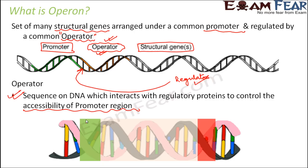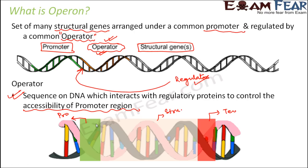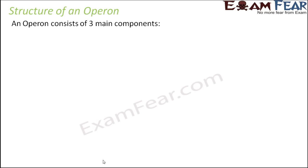The green structure is the promoter, the red structure is the terminator, and in between are the structural genes. Now we have introduced another important section of DNA adjacent to the promoter — that region is called the operator. Let us discuss the structure of an operon in a little more detail.